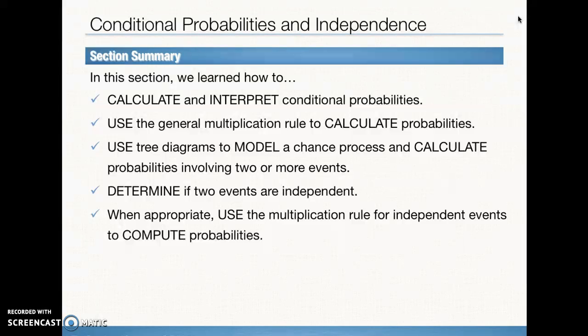Let's get back to our summary. We have learned how to calculate and interpret conditional probabilities. We've used the general multiplication rule to calculate probabilities. We learned how to use tree diagrams and then calculate both AND probabilities. We can also do combinations of probabilities using that tree diagram. Determine if two events are independent by seeing if their conditional probability is equal to the independent probability or the single event probability. And when appropriate, use the multiplication rule for independent events. Just a reminder, we need lots of practice from this section to be able to make sure we know how to solve all the problems. See you in class.